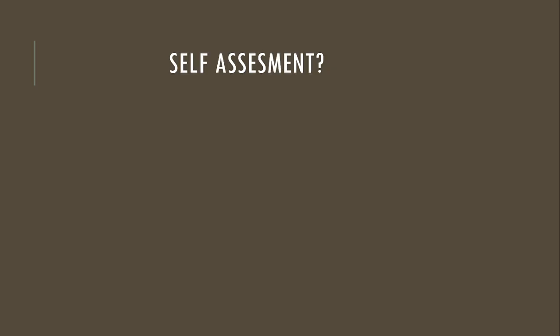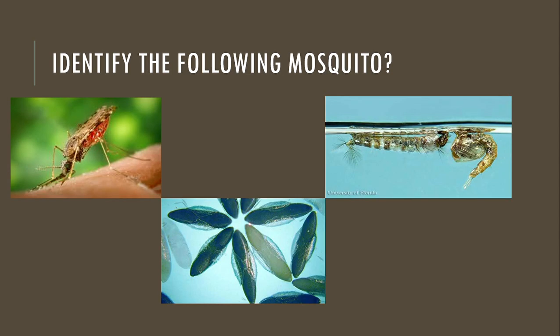Now moving on to our self-assessment questions. Identify the following mosquito. This is a picture of the adult mosquito — it lies inclined to the surface. The characteristics of these eggs are boat-shaped, and the character of the larvae is lying under the surface of the water. This sums up to the characteristics of Anopheles mosquito.